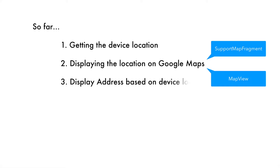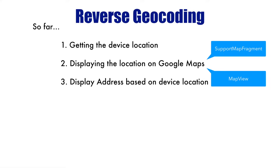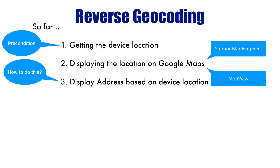The next obvious choice would be to display the address based on the device location. Getting the address based on the device location is called reverse geocoding. The precondition is you need to know the device location, which we have already done. To do this we use an API called Geocoder.